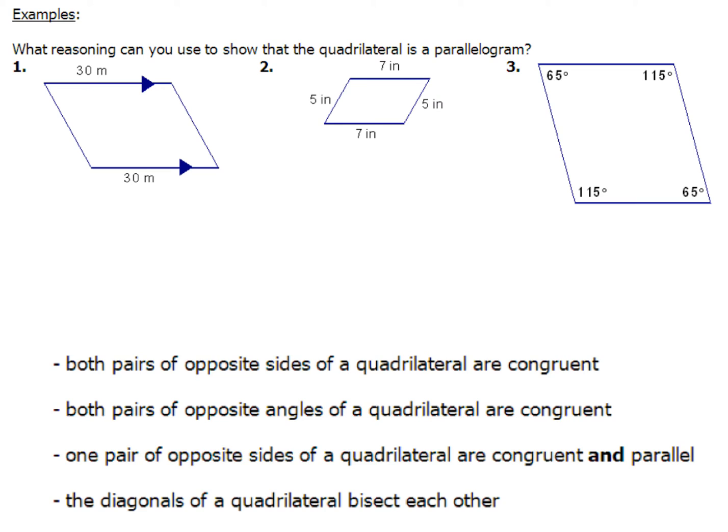Let's take a look at example number one — the information provided in the diagram. We've got one pair of sides that's 30 and that same pair of sides is parallel, because we can see that by the markings on our diagram. That's what those little triangles mean right there.